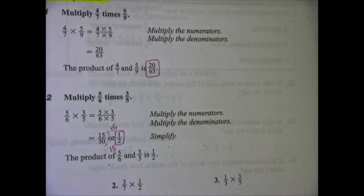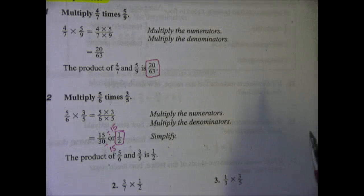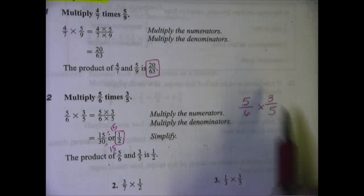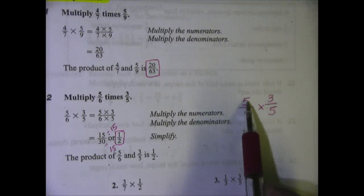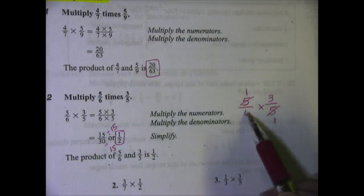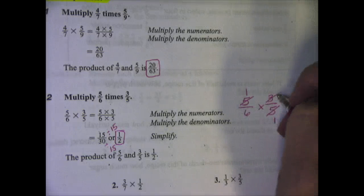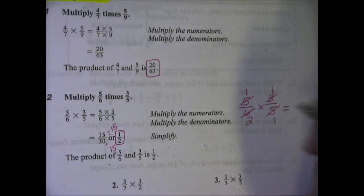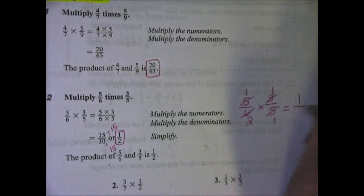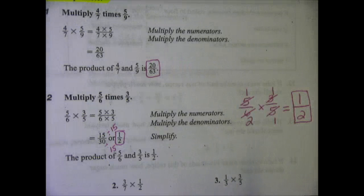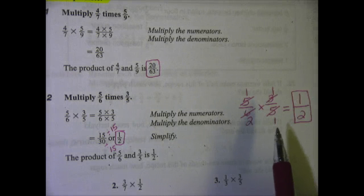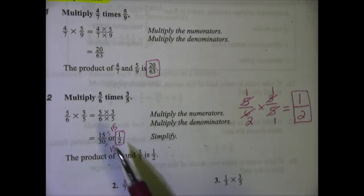This week I've also been showing you how you can cross simplify. So we have 5/6 times 3/5. We look across and see if we can simplify. 5 and 5 are the same, so 5 goes into 5 one time. 3 and 6 can also simplify because 6 is divisible by 3. 3 goes into 3 one time, 3 goes into 6 two times. Then multiply: 1 times 1 is 1, and 2 times 1 is 2. You get the same answer of 1/2. I find this to be the easiest method because you don't have to work with such large numbers, but either way is fine.